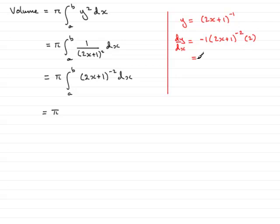So that you can see that this gives minus 2 times (2x plus 1) to the minus 2, which is really 2 over (2x plus 1) all squared.